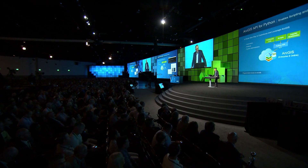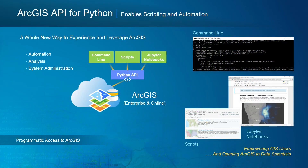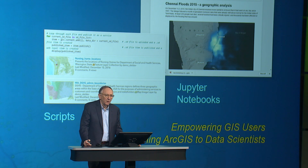I'd also like to mention the API for Python. We'll do some demonstrations of this after the break. This enables scripting and automation of enterprise at the command line level, building scripts, or the use of Jupyter notebooks — a tool for scientists in the past, but now becoming commonplace. This allows us to automate routine work, automate analytics, build models, and handle the basics of system administration.